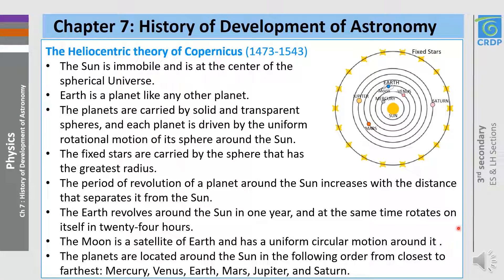And finally, the planets are located around the sun in the following order from closest to farthest: Mercury, Venus, Earth, Mars, Jupiter, and Saturn.